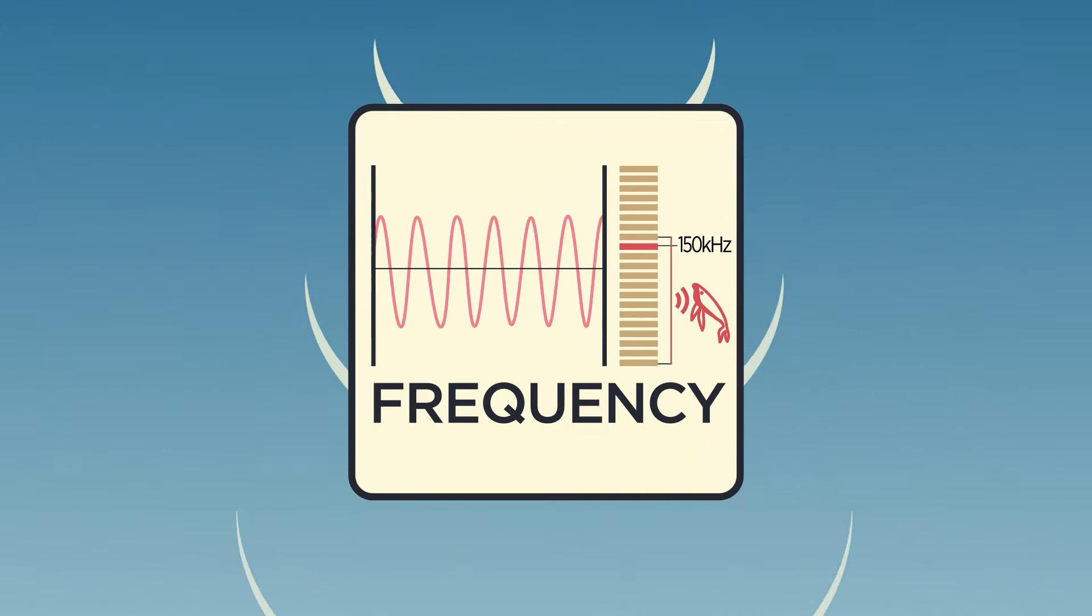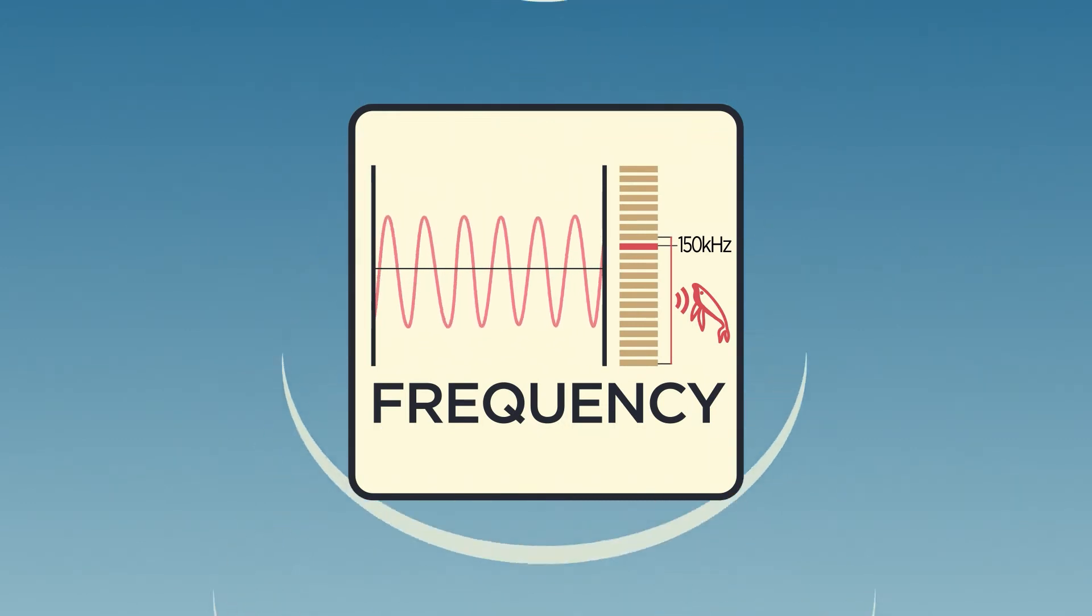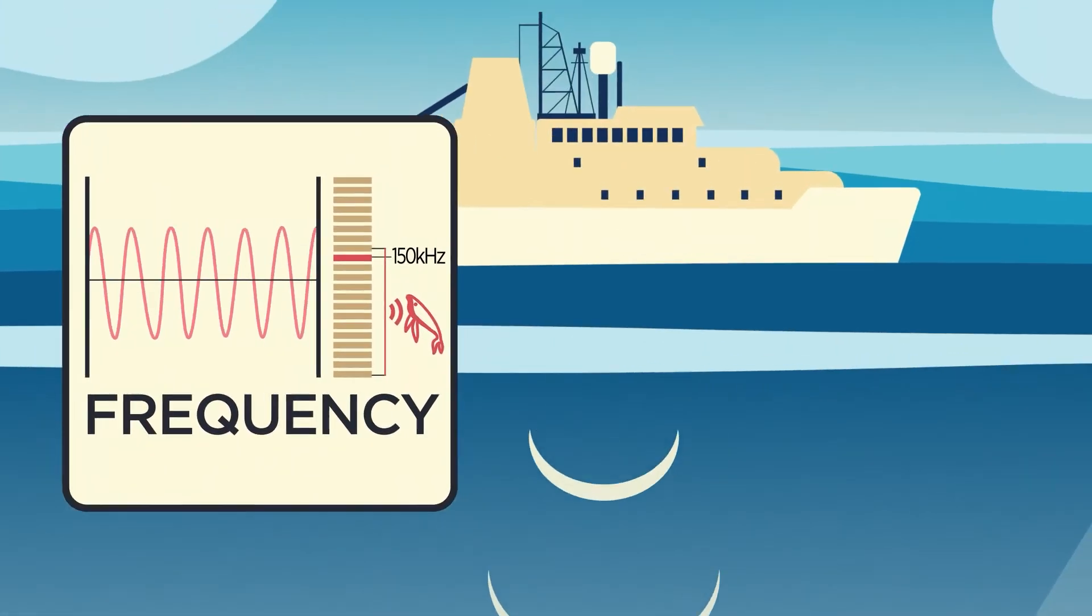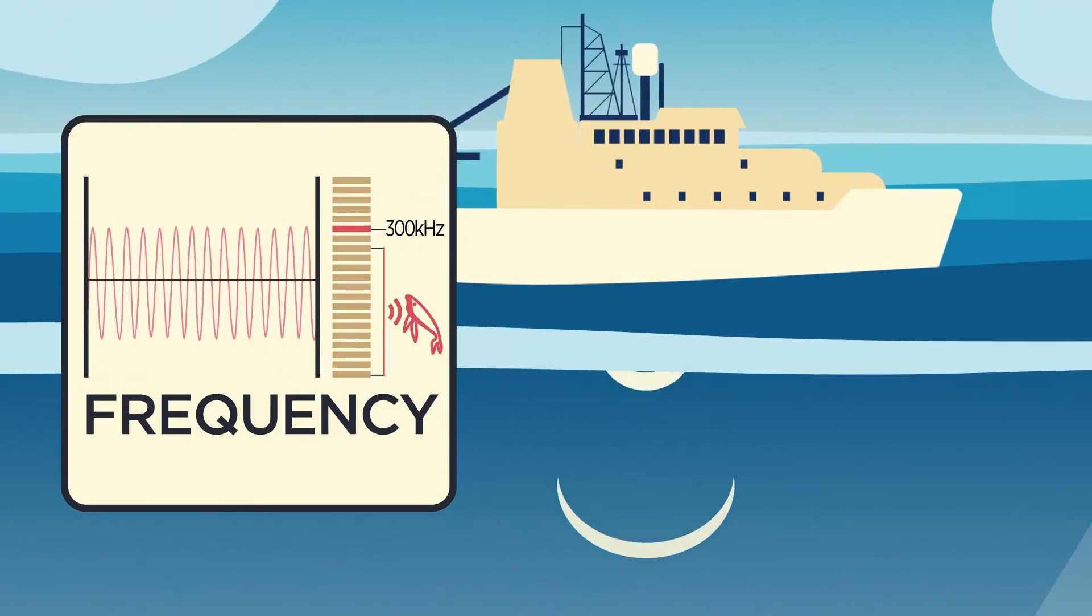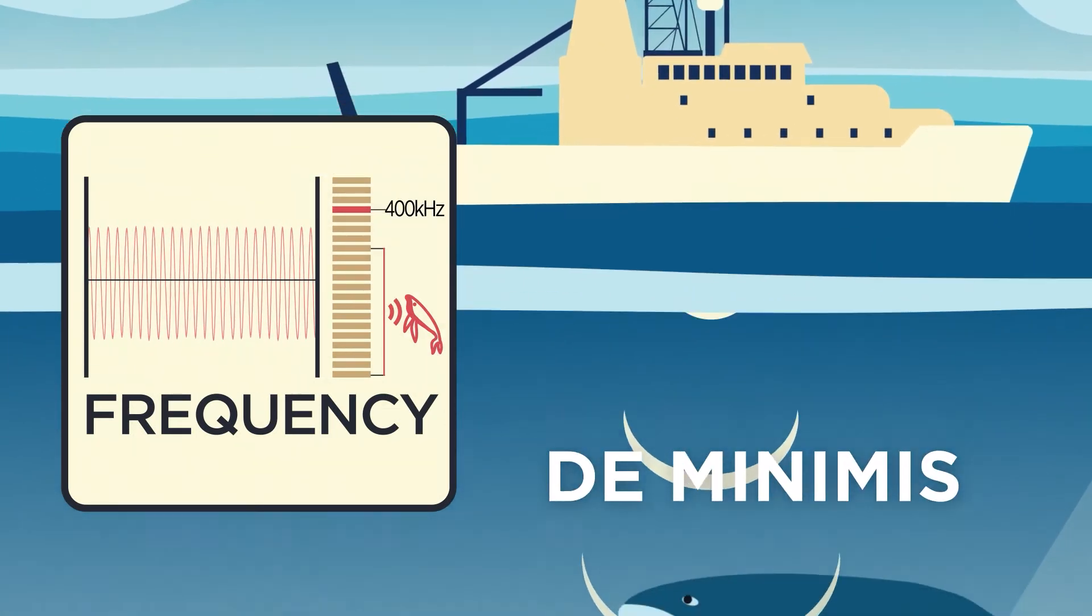The first characteristic was the frequency, or pitch, of the sound. Some sources transmit sounds that are above the hearing range of most marine mammals and are considered de minimis simply because the animals cannot hear them.